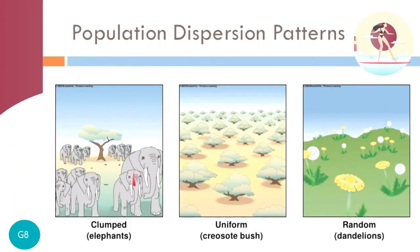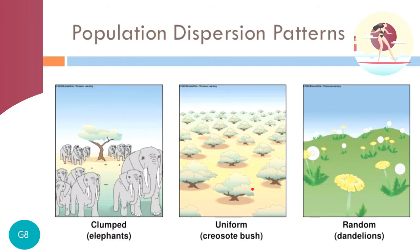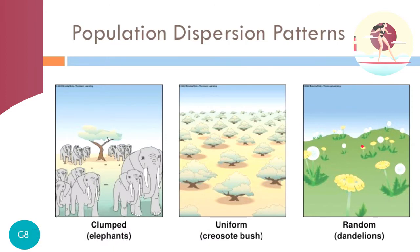More examples: clumped dispersion is shown by elephants herding together. Uniform dispersion, such as the creosote bush, shows equal spacing between organisms so that roots can get an equal share of nutrients and water from the soil. Random dispersion — wherever the wind blows, such as dandelions — also includes spore-forming fungi, which are dispersed in the same manner.